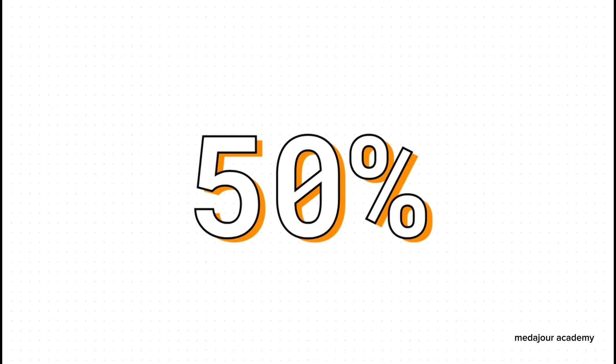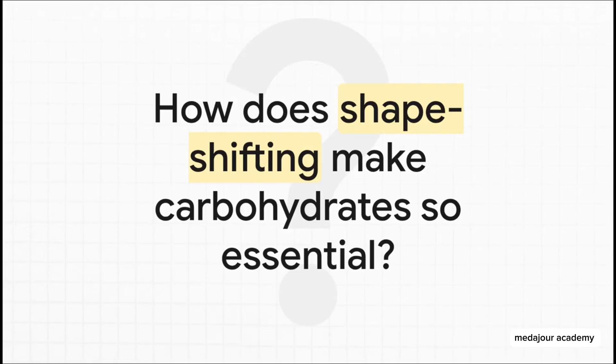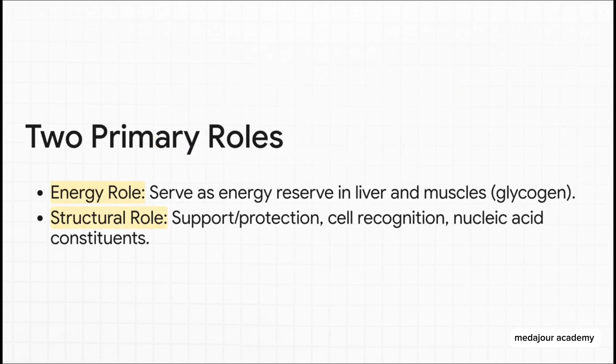Think about energy. For the average person, about 50% — half of all the calories you eat in a day — come from carbohydrates. They are our body's number one go-to fuel source. That stable ring shape is the perfect little package for storing energy: compact and efficient. Our bodies can easily pop them open for a quick burst of fuel, or link them together into long chains like glycogen to save for later. And structurally, these rings are like nature's Lego bricks — link them one way, you get energy storage; link them differently, and you get the super tough, rigid stuff like cellulose that makes up plants. They even stick out from our cells like tiny antennas, helping cells recognize each other — that's how blood types work.